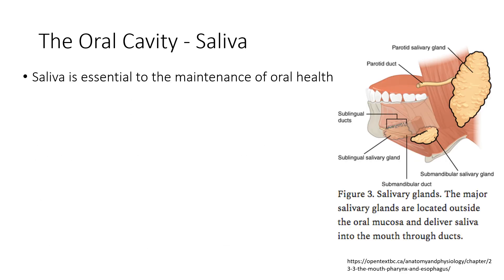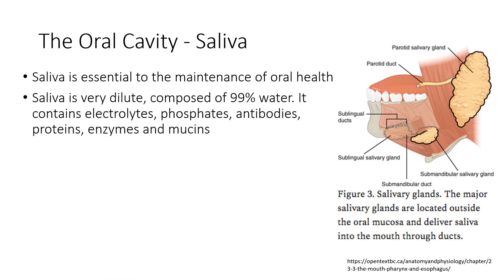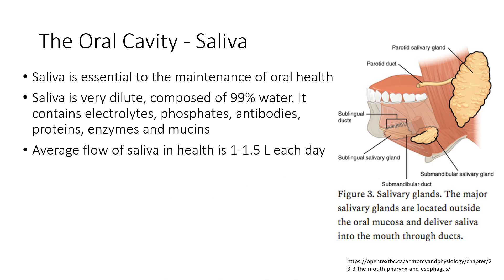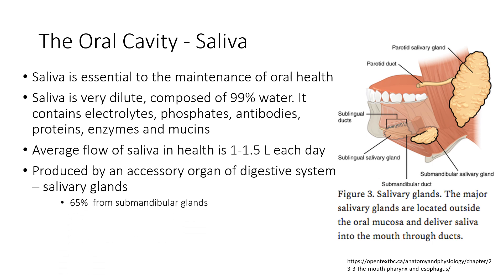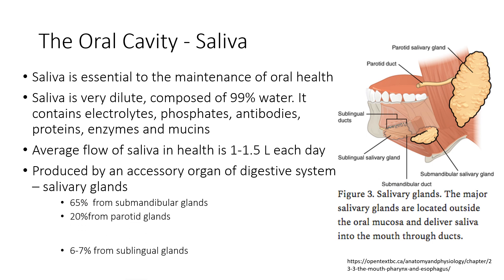Saliva is essential to the maintenance of oral health. It is very dilute and composed of 99% water, and contains electrolytes, phosphates, antibodies, proteins, enzymes and mucins. The average flow of saliva in a healthy person is 1 to 1.5 litres each day. It is produced by the accessory digestive salivary glands — 65% from the submandibular glands and 20% from the parotid glands.